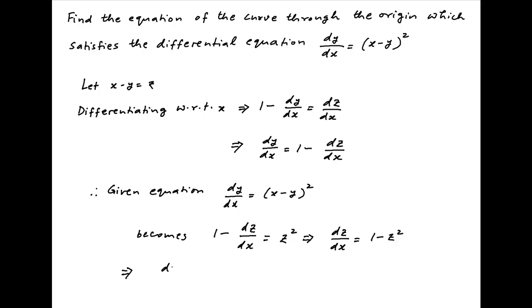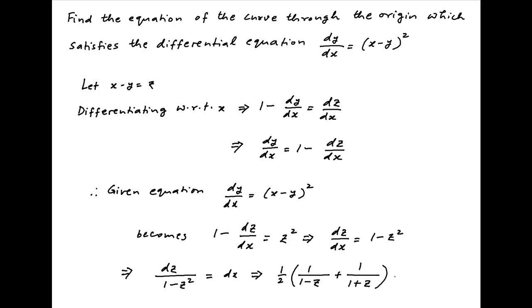Now separating the variables, we get dz upon (1 minus z²) is equal to dx. This can also be written as one half of [1 upon (1 minus z) plus 1 upon (1 plus z)] dz is equal to dx.